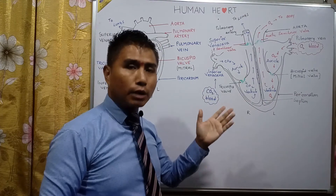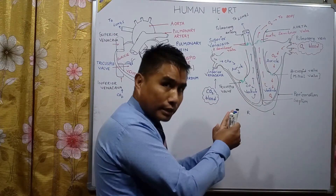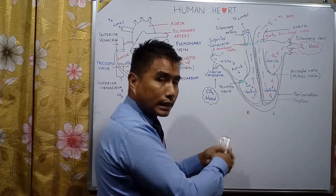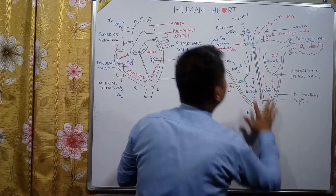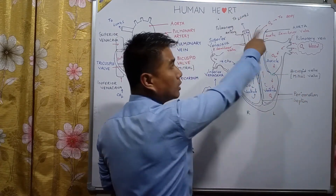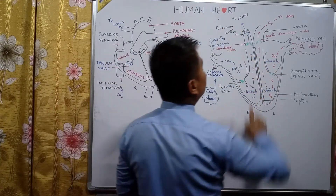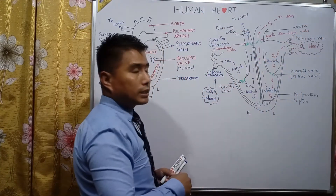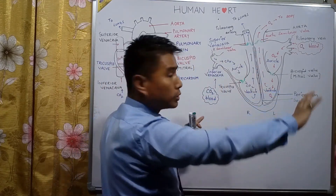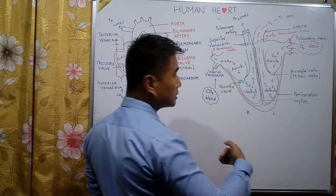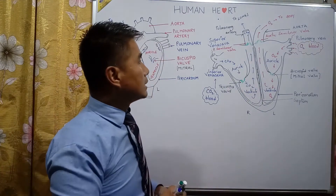Both ventricles contract together. When they contract, blood tries to go back to the auricles but the valves close, so blood exits — carbon dioxide-containing blood via the pulmonary artery to the lungs, and oxygenated blood via the aorta to the body. When the ventricles expand, a suction force draws blood back in from both sides.